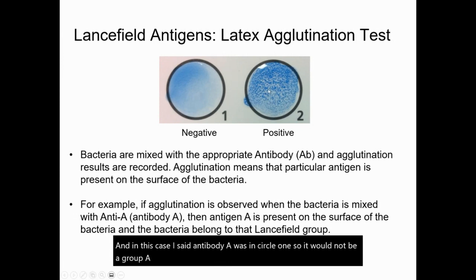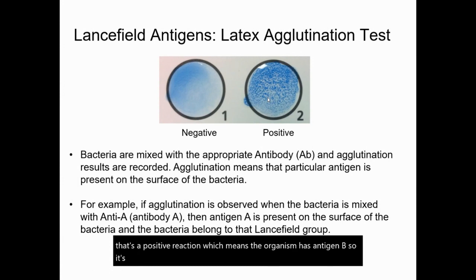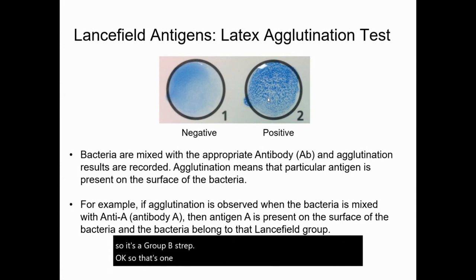If I added antibody B to circle two and that's a positive reaction, that means the organism has antigen B, so it's a group B Strep. That's one way that you could use this test.